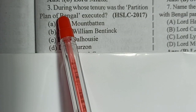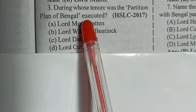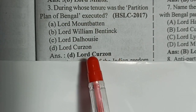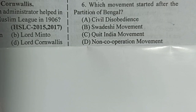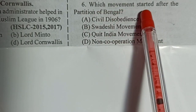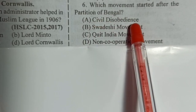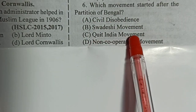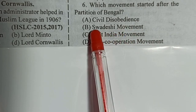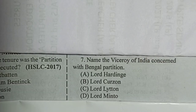Question number three: During whose tenure was the Partition of Bengal executed? The answer is Lord Curzon. Next: Which movement started after the Partition of Bengal — Civil Disobedience Movement, Quit India Movement, or Non-Cooperation Movement? The answer is the Swadeshi Movement.